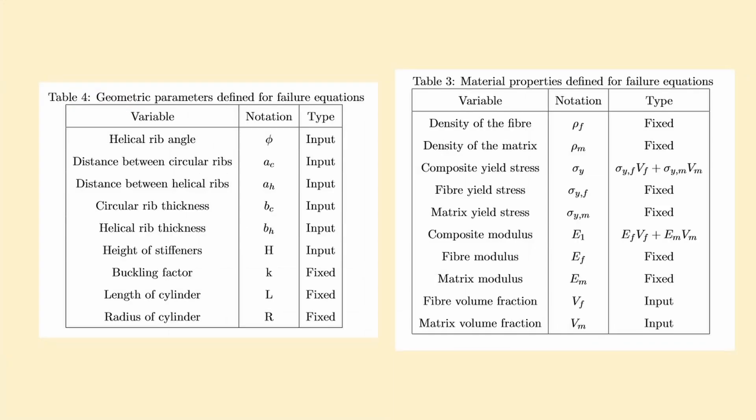The parameters used in these equations were geometrical parameters for the structure, like the angle of the helical ribs and the ratio between the size of the ribs and the gaps in between them, as well as properties for the whole structure, like the volume fraction used in the composite and the thickness of the structure as a whole.